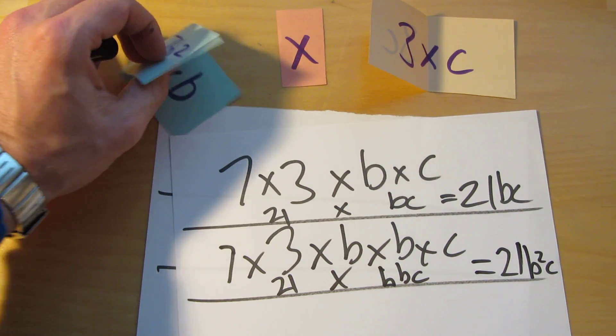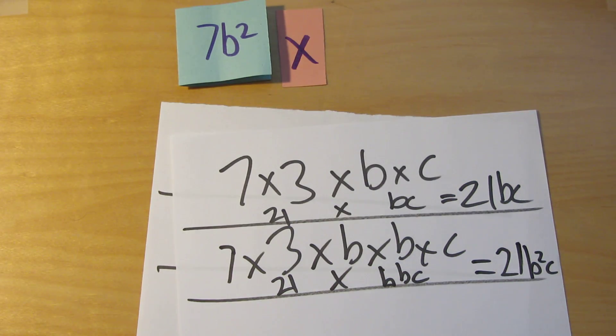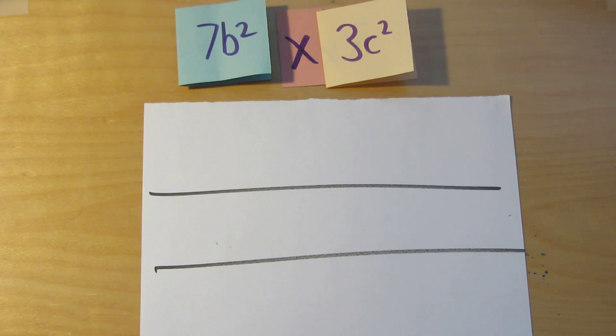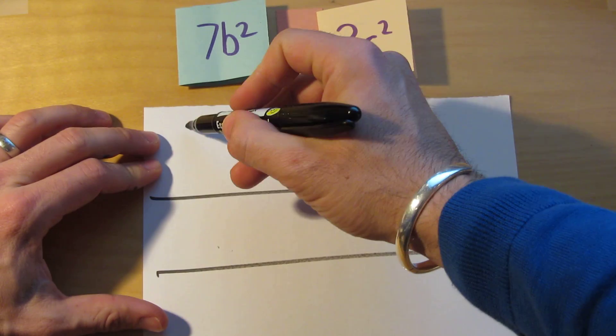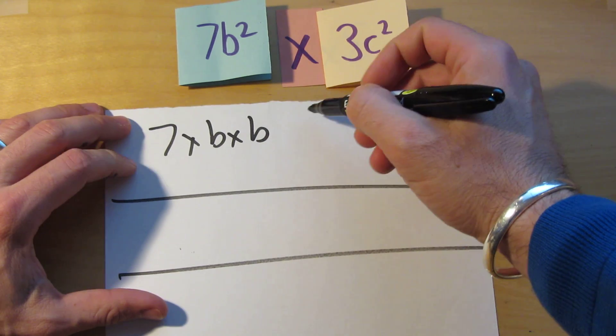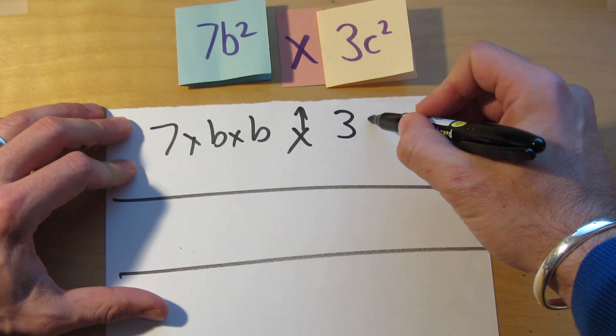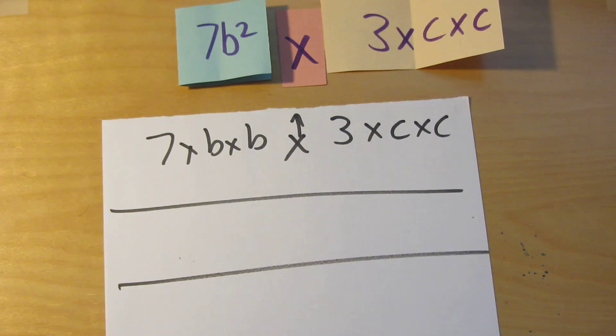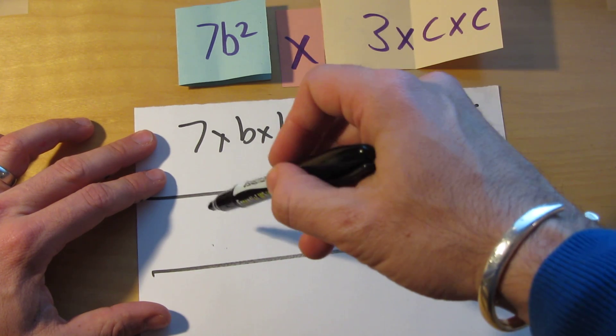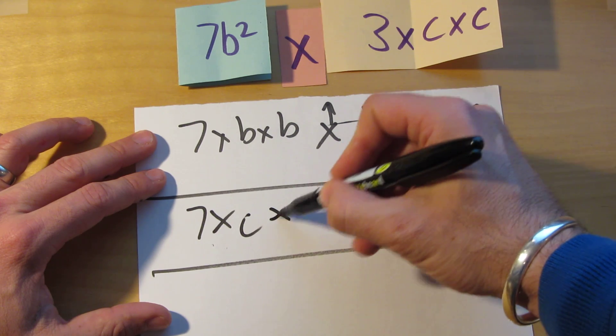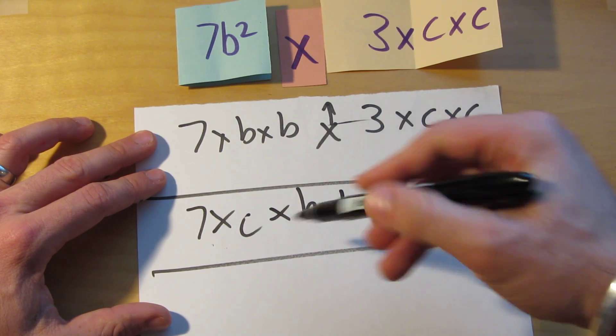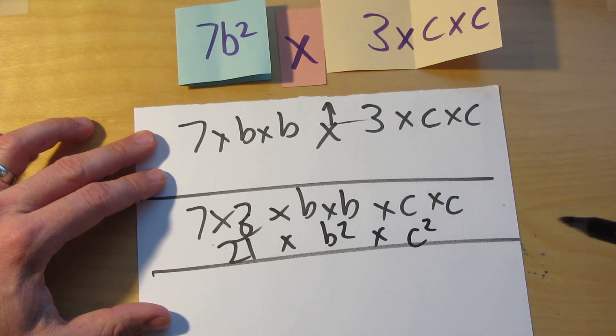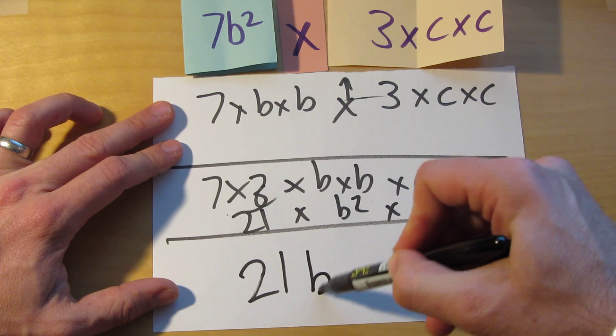Okay. And then in the final example we'll go with 7b squared times 3c squared. Okay. So 7b squared fully expanded is this: 7 times b times b times 3 times c times c, which is 3c fully expanded. Okay. So rearrange that so we've got the numbers, the coefficients all together. 7 times 3 times b times b times c times c. So that's a 3. That's 21. That's b squared. That's c squared. So the final answer is 21b squared c squared.